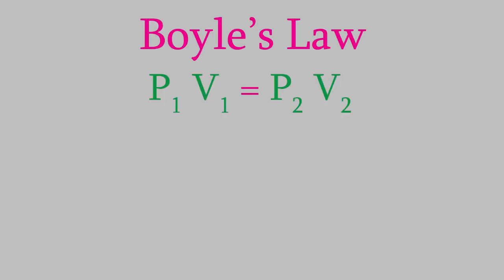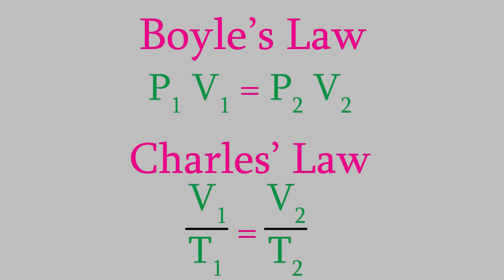So Boyle's Law tells us how pressure and volume are connected, and Charles's Law tells us how temperature and volume are connected. There's one more gas law that I want to tell you about today. In 1811, the Italian physicist Amadeo Avogadro, the same guy that Avogadro's number is named for,